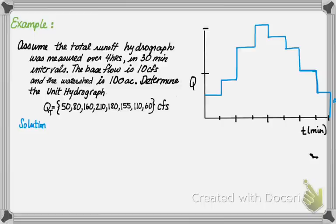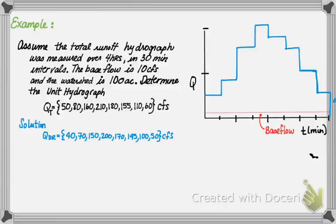First, we need to remove the base flow. By removing the base flow, we can calculate the direct runoff hydrograph. Each of the total runoff hydrograph values, or ordinate values, are subtracted from 10 to get the direct flow. Thus, 50 minus 10 gives us 40, 80 minus 10 gives us 70, and so on.